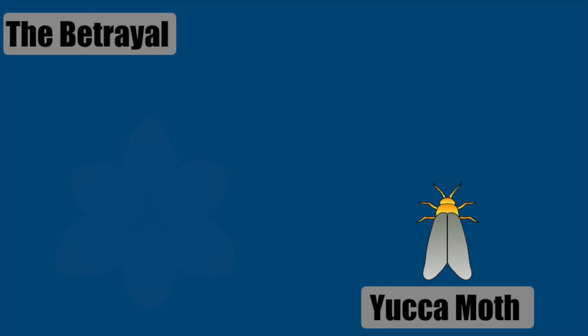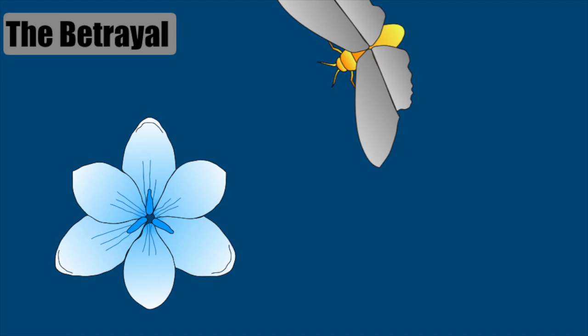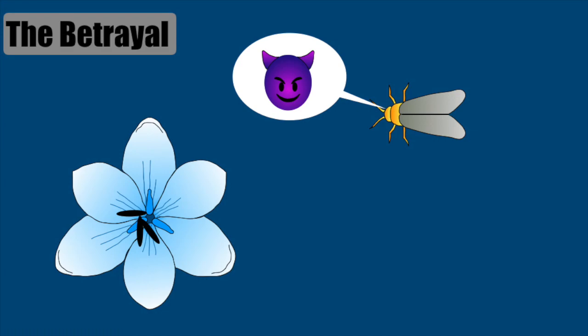This yucca moth, who was supposed to pollinate the yucca plant, lets down this friendship. The moth lays her egg inside the flower but doesn't pollinate it. This moth uses yucca flower for her benefit. This moth is a cheater.